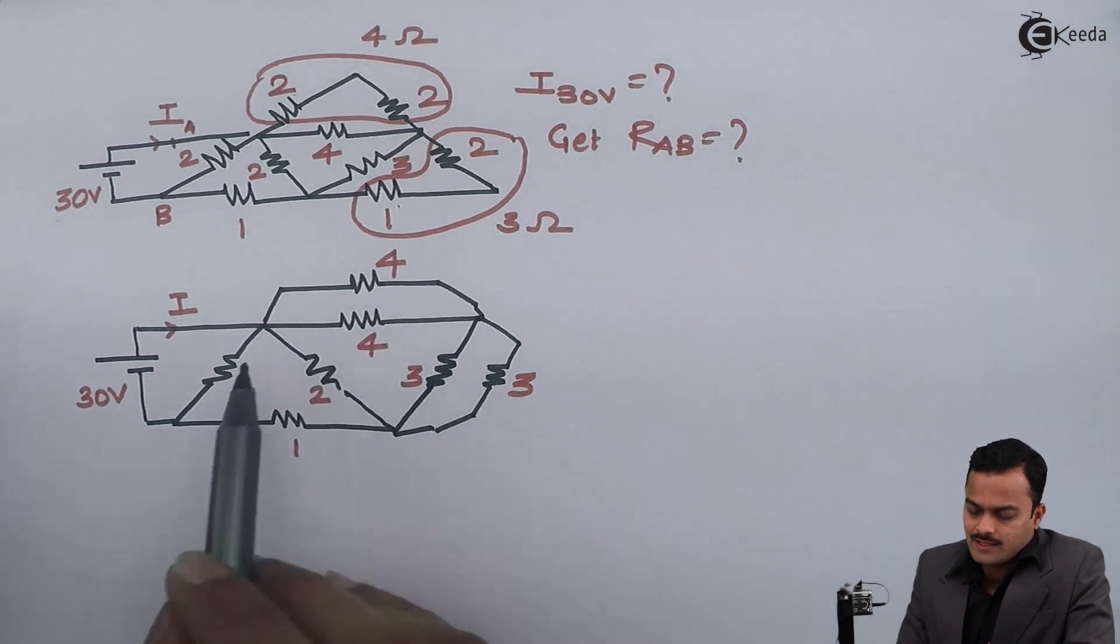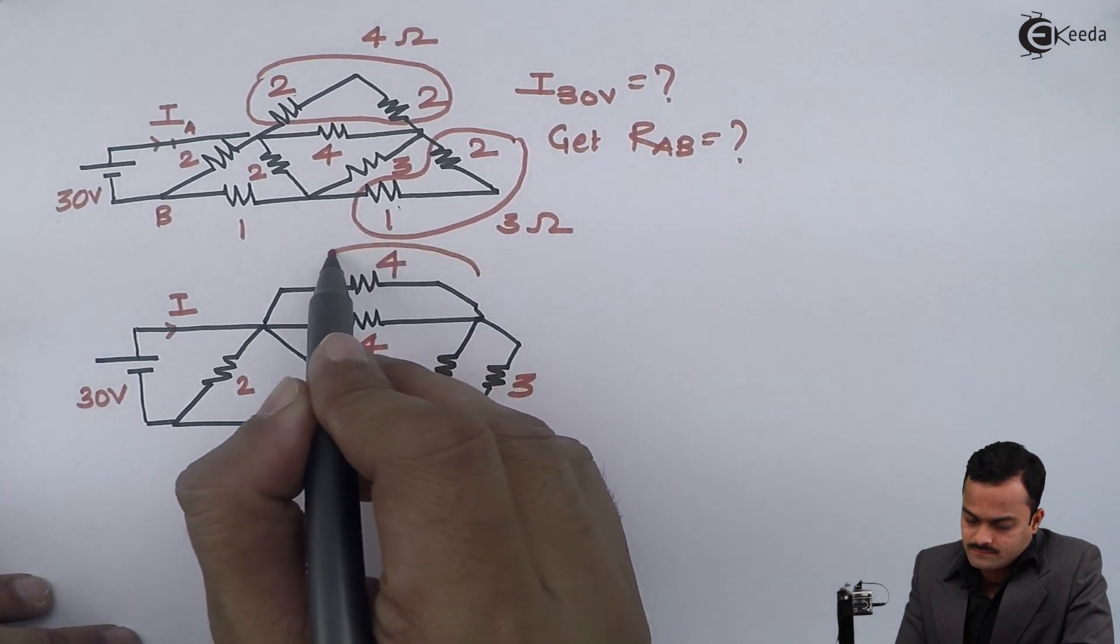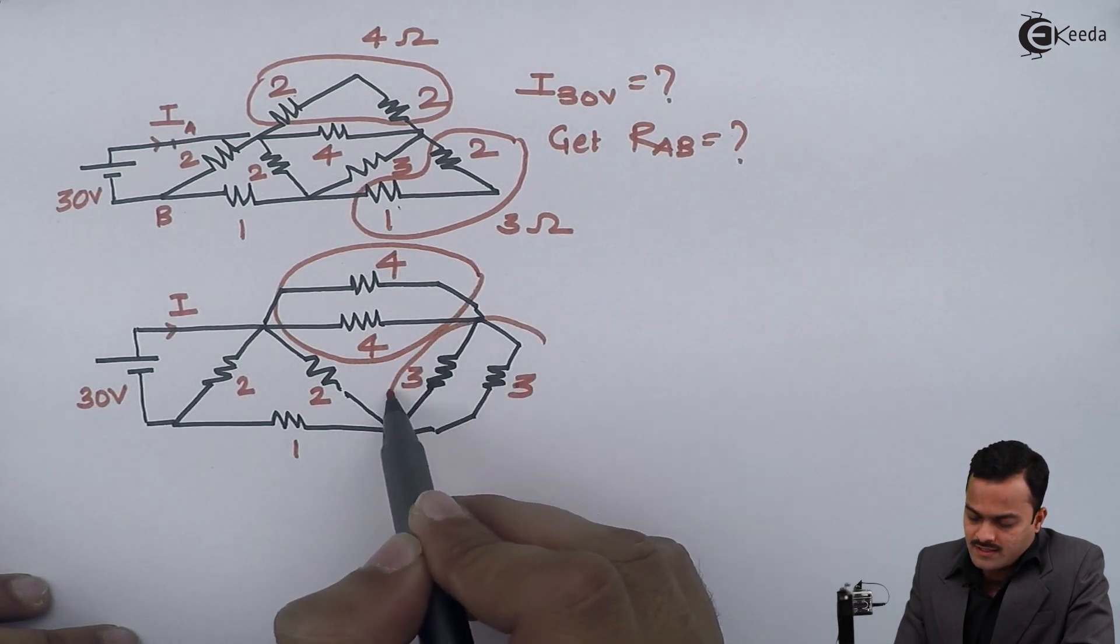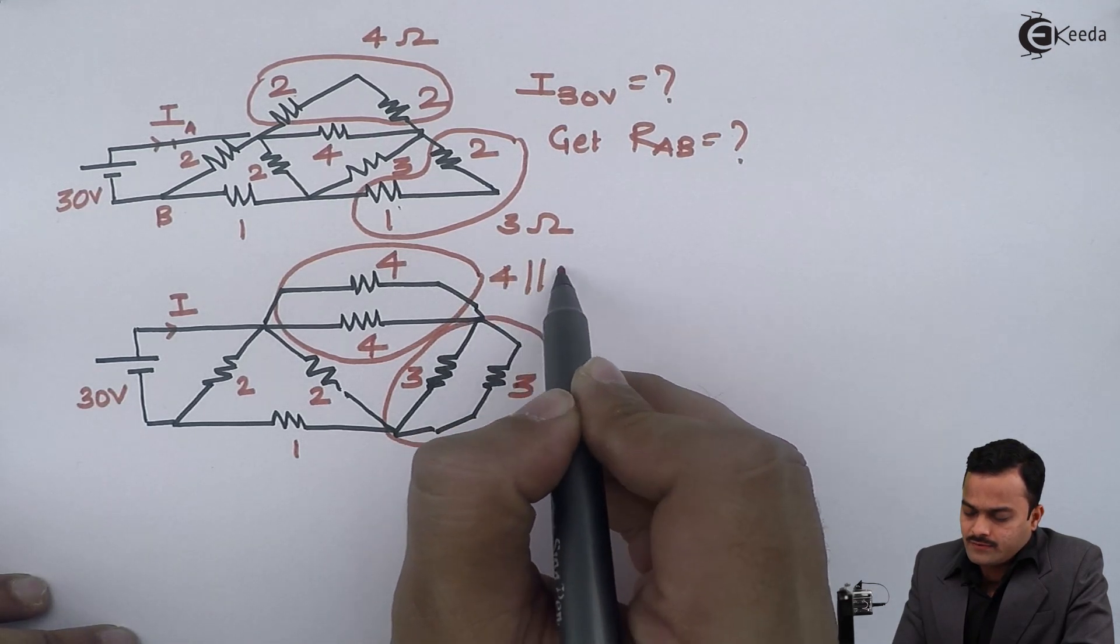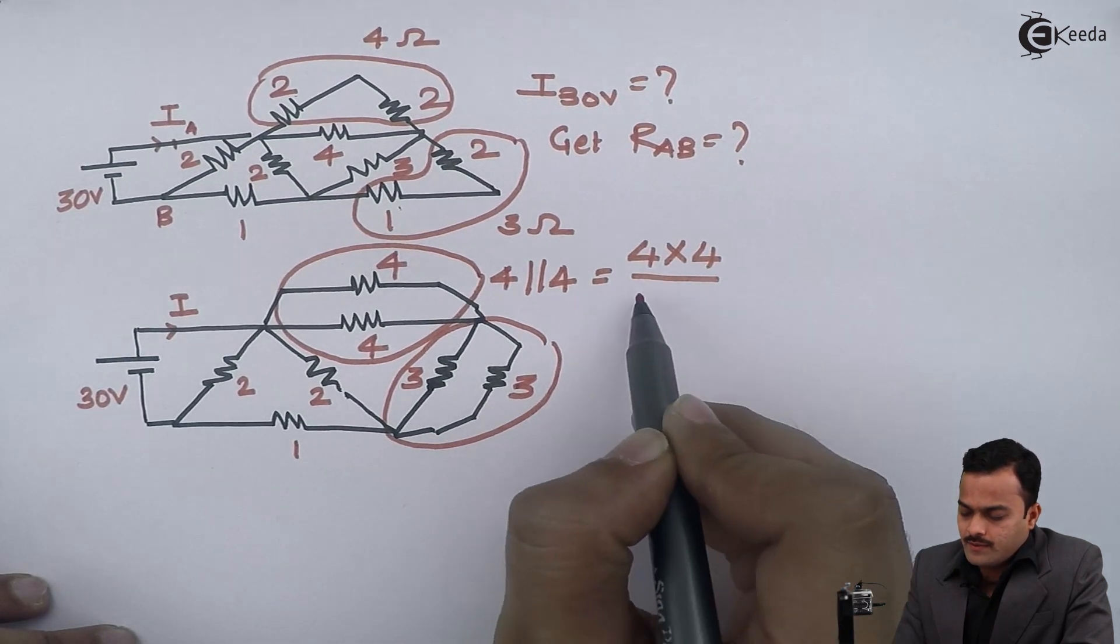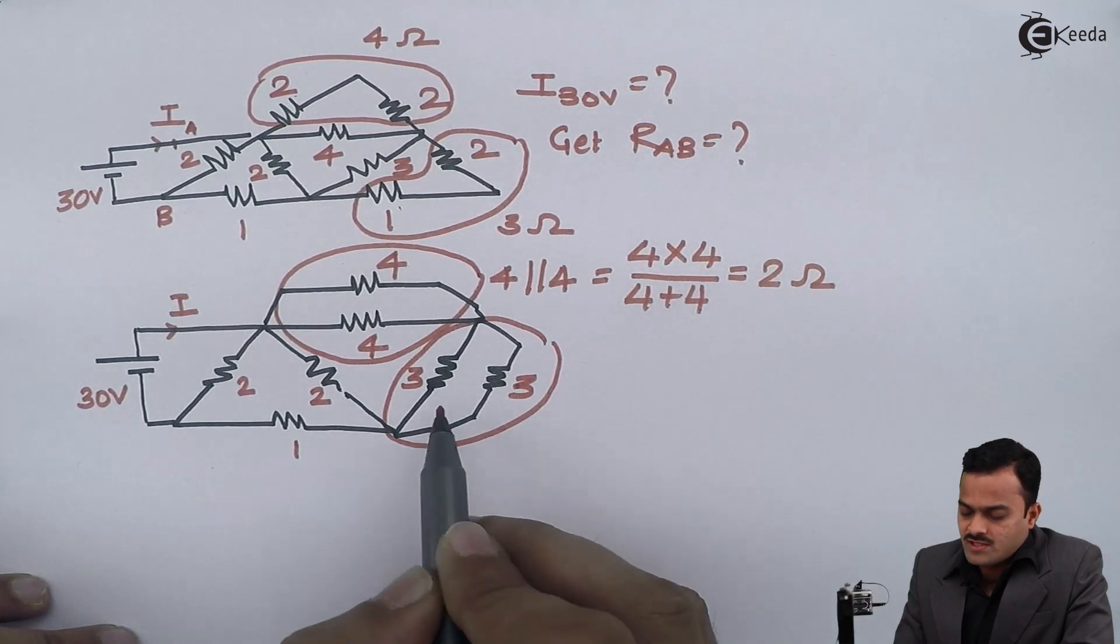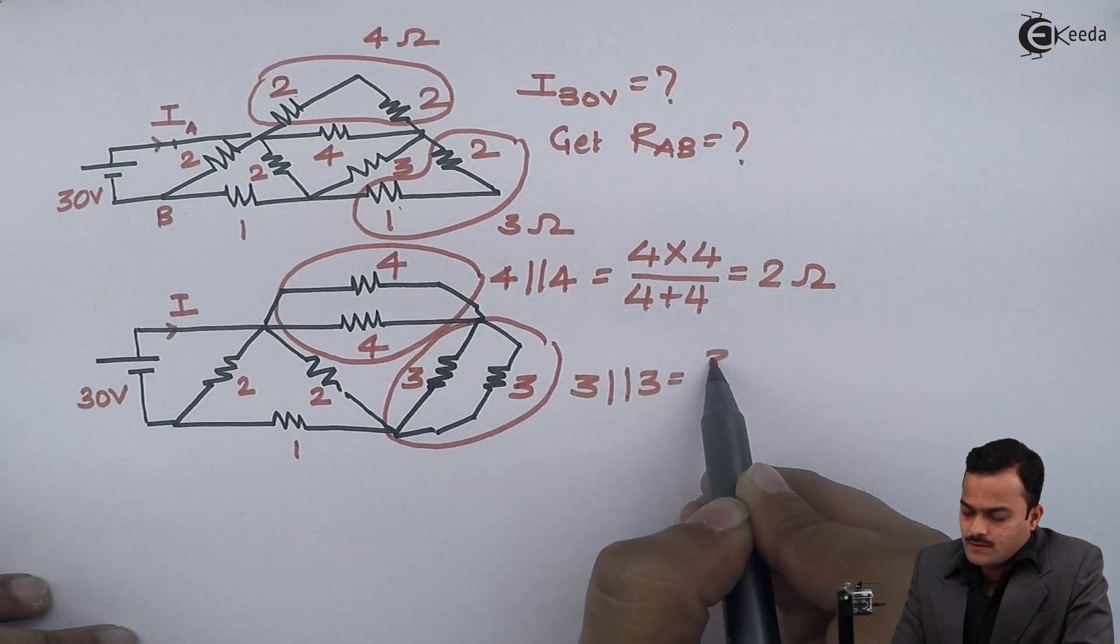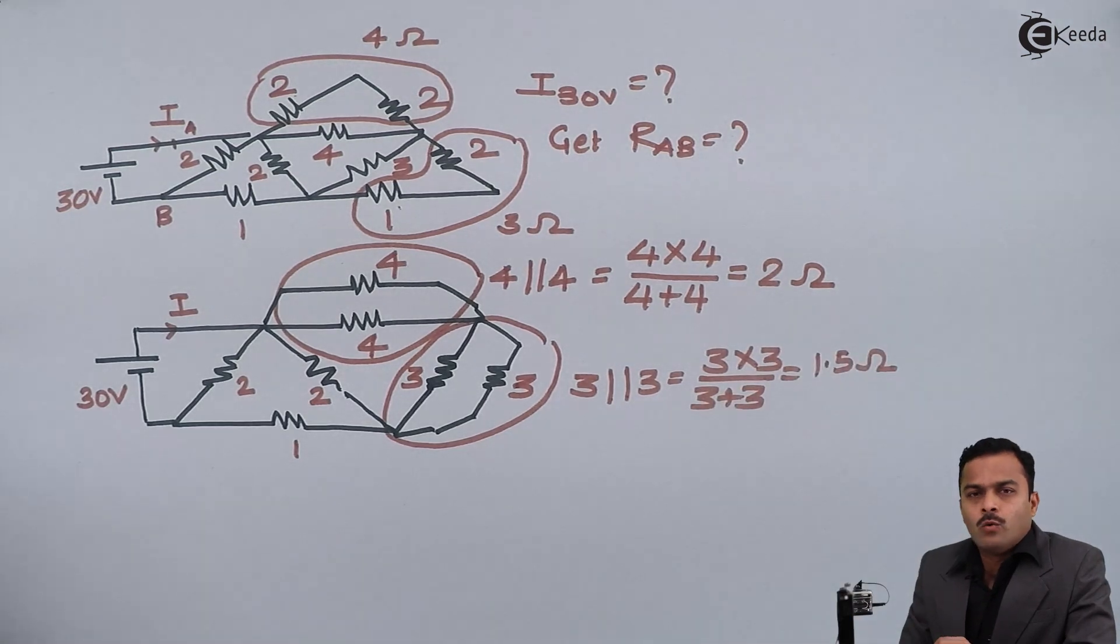Here if I see properly, I will notice that this 4 ohm and this 4 ohm are in parallel. These 3 ohm resistors are also in parallel. So if I reduce 4 parallel with 4, the answer is 4 multiplied by 4 divided by 4 plus 4, and I will get 2 ohm. Similarly, 3 parallel 3, I will get 1.5 ohm.